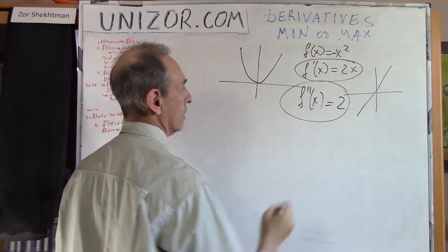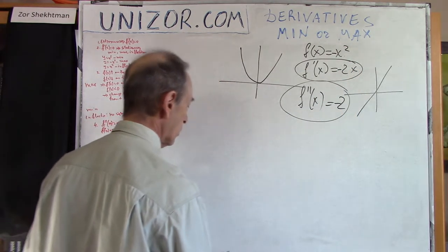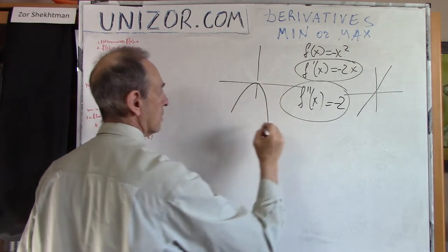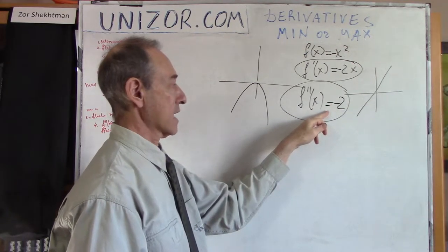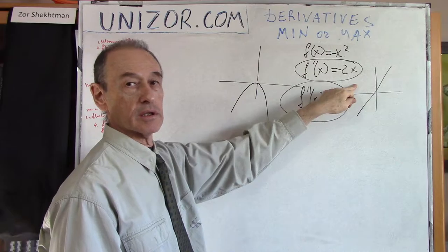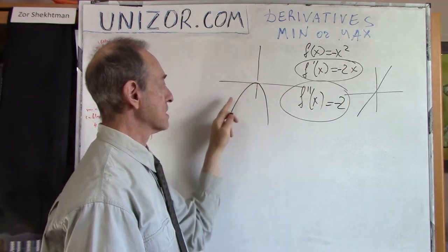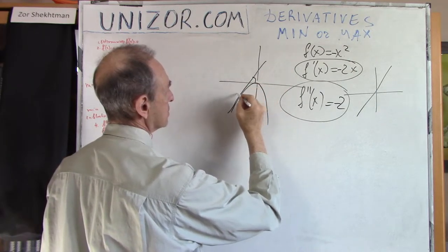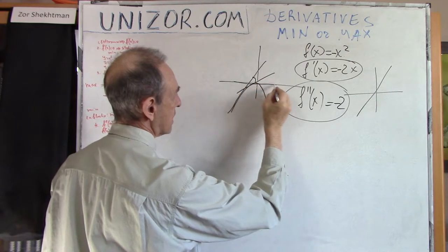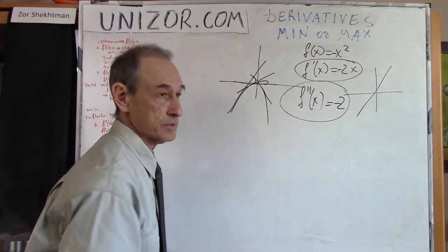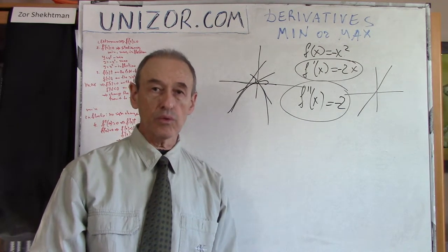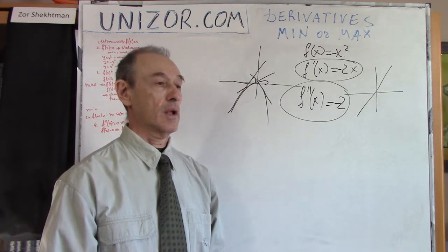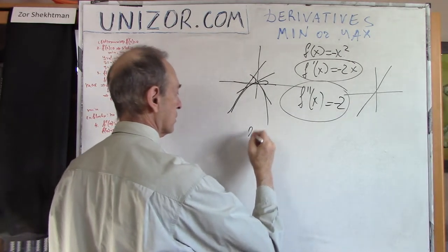Similarly, for f(x) = −x², the first derivative is −2x and the second derivative is −2, which is negative. The graph shows a local maximum. A negative second derivative means the first derivative is monotonically decreasing — so it's positive on the left and negative on the right. That's exactly the sign-change condition for a maximum. So: if the second derivative is negative at a stationary point, that point is a local maximum.